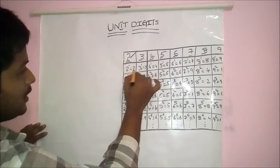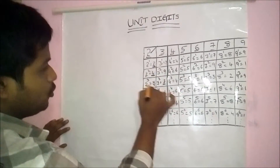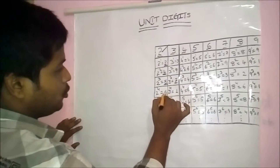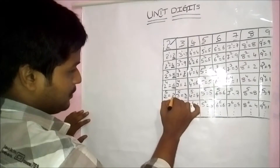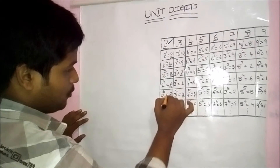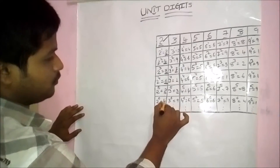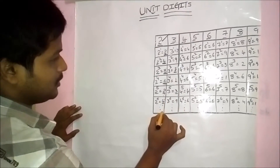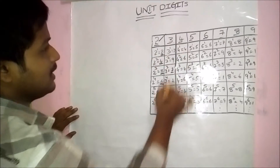2 power 1 is 2, 2 power 2 is 4, 2 cubed is 8, 2 power 4 unit digit is 6. It repeats: 2 power 5 unit digit is 2, 2 power 6 is 4, 2 power 7 is 8. Again it repeats — the cycle continues.